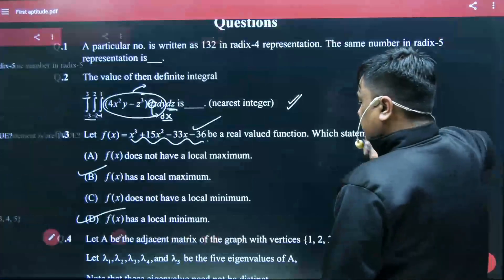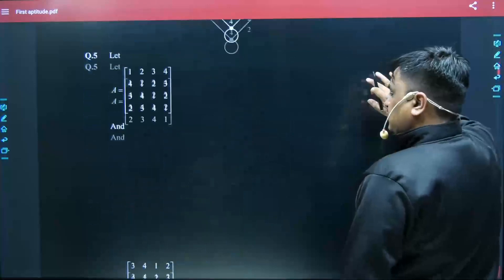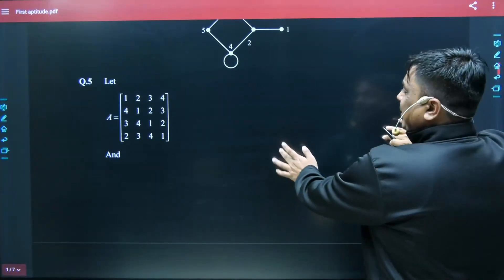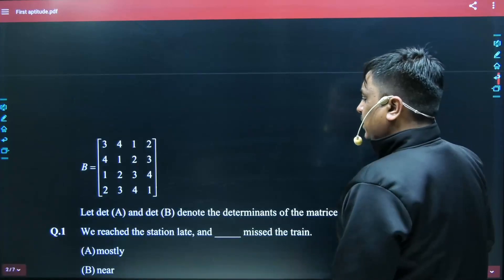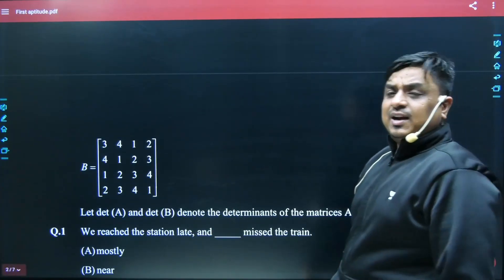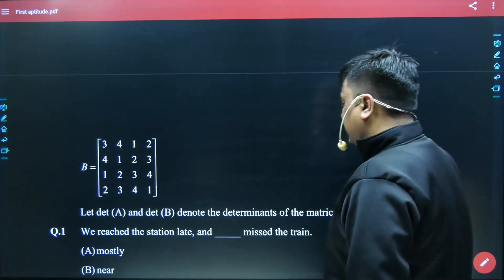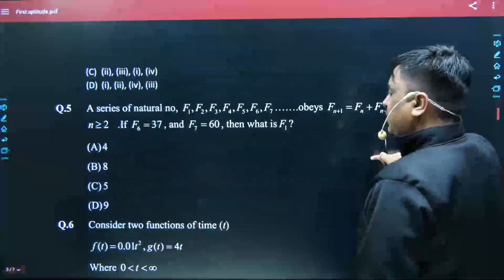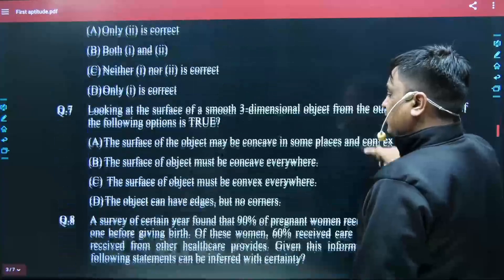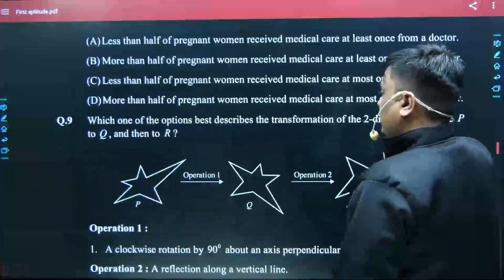Here two matrices were given—matrix A and matrix B. The determinant of matrix A and B has been written as det(A) det(B). Taking reference of this, what they had asked...